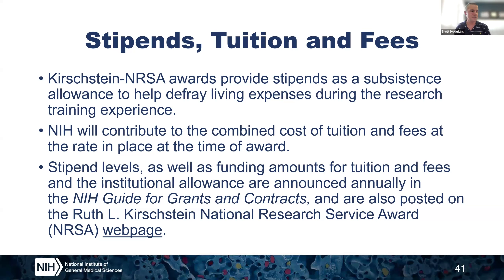The first cost — the most common one that makes up the bulk and preponderance of the T32 application — is the stipends for the individual trainees. Each individual trainee does receive a stipend, which is a subsistence allowance to help defray the living expenses during the research training experience. Currently at NIH, our stipend level for these trainees on this application is $27,144 per year.